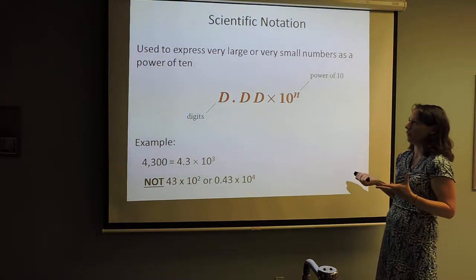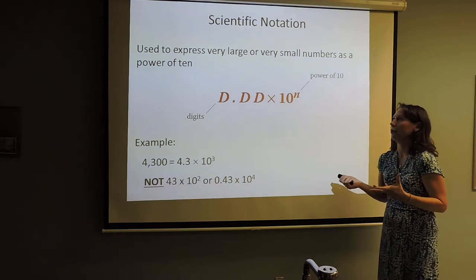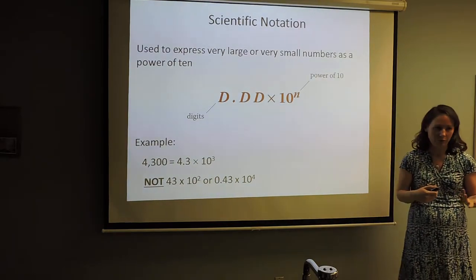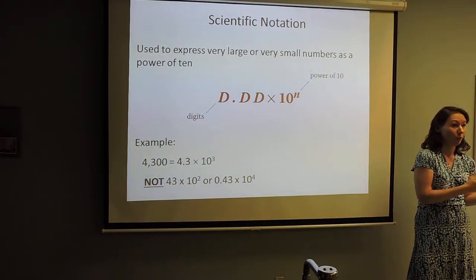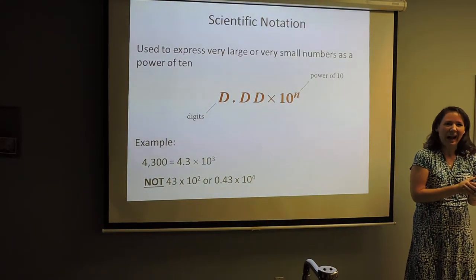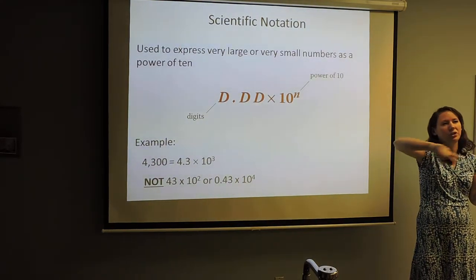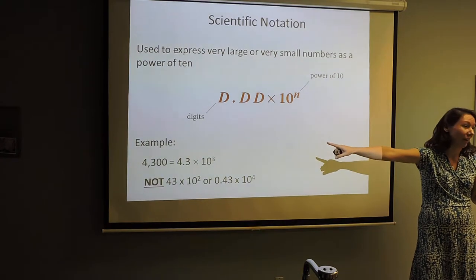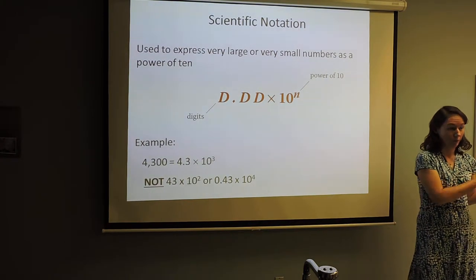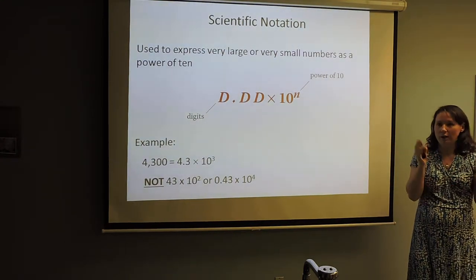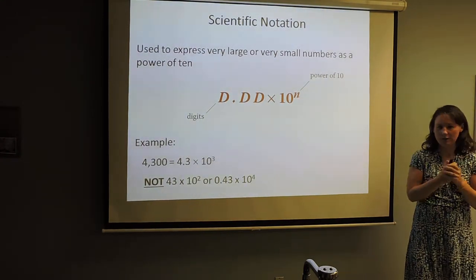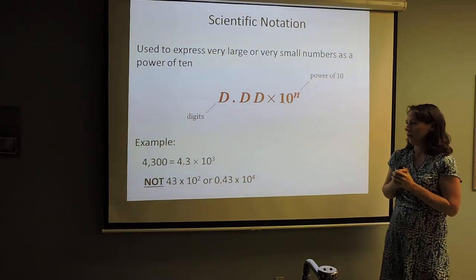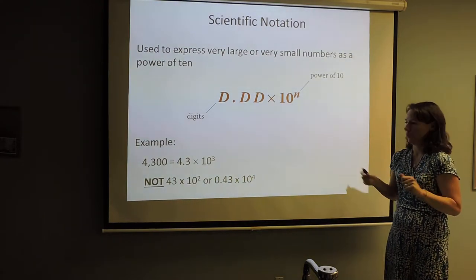We use scientific notation to represent very large numbers or very small numbers in a clean format. I don't like seeing a big long string of zeros. We like a nice, short, concise number — we don't need all those zeros.